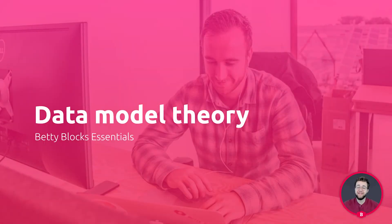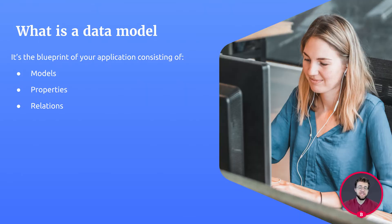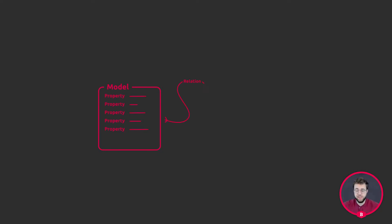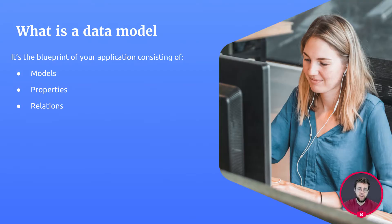Hello and welcome to the Data Model Essentials Theory. A data model is the blueprint of an application. Every application you know contains a data model in one form or another. Data models consist of models that have a variety of properties, and these models usually have a relationship between each other. This then forms a relational database, or in other words, your data model. The data of your application is held within your data model.